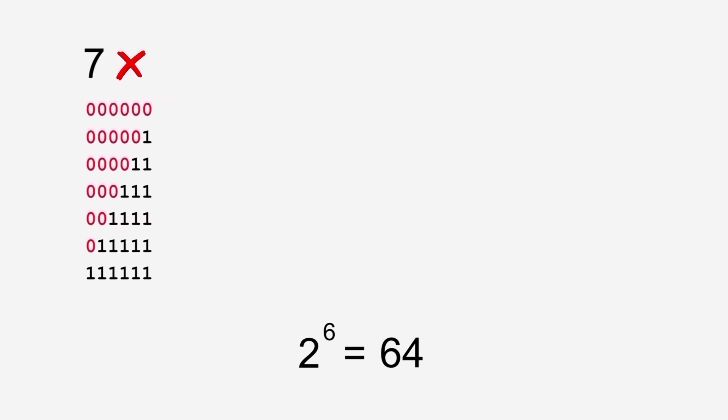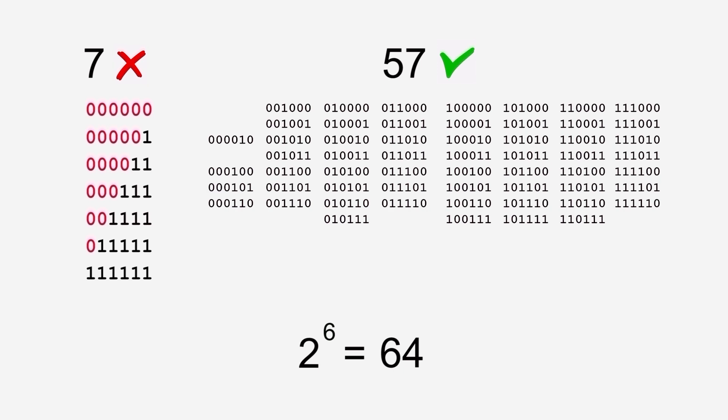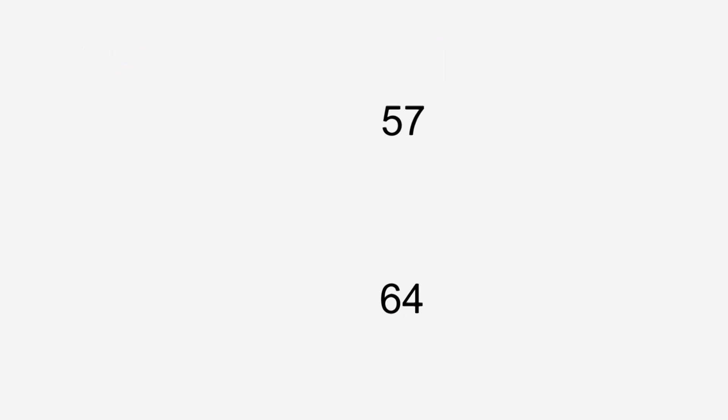Seven in total. Those seven arrangements will not form a heptagon. The remaining 57 will. So the probability of forming a heptagon with six random points on AB is 57 out of 64.